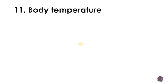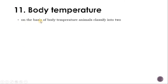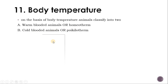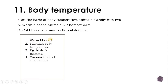Now we are discussing the last parameter: body temperature. On the basis of body temperature, animals are classified into two. First is warm-blooded or homeothermic animals. Warm-blooded animals maintain their body temperature regardless of the atmosphere — if the atmospheric temperature rises or falls, the body temperature does not fluctuate. The example is birds and mammals, which are warm-blooded animals.